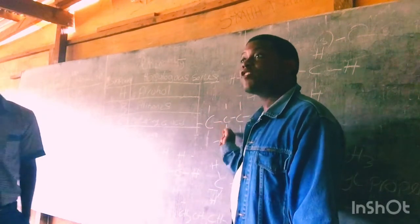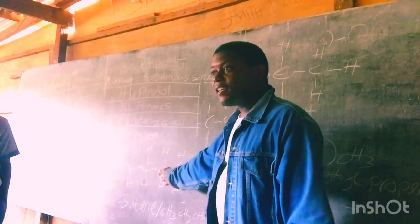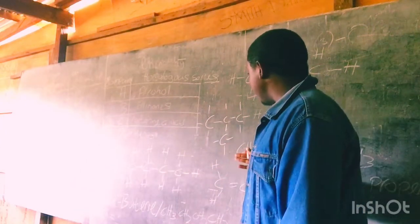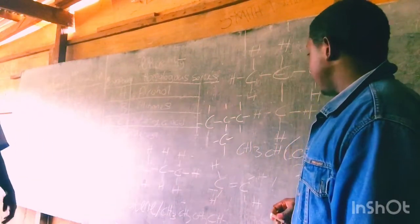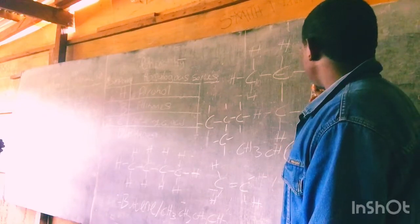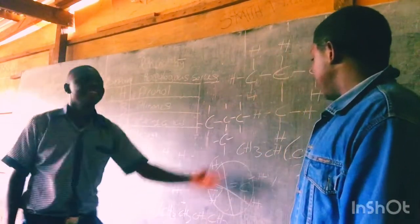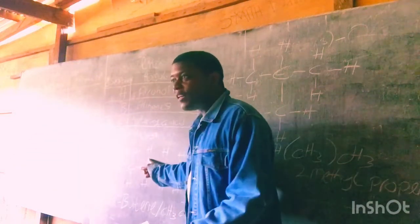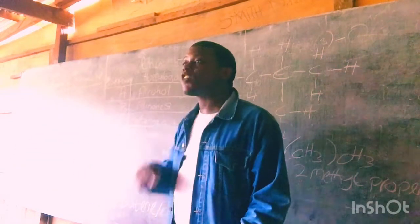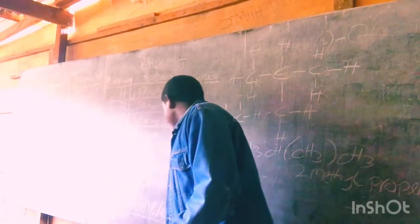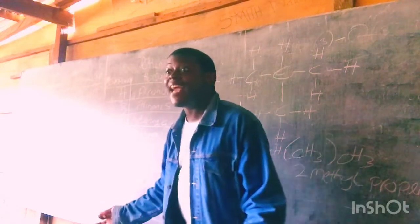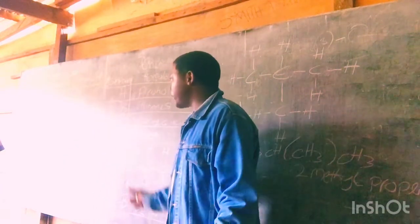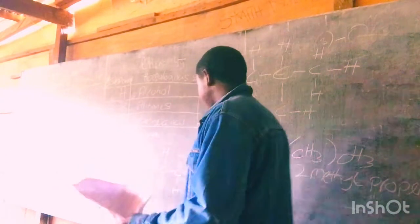That's how you draw isomers. One important thing: if you are writing an isomer of a particular compound and it is an alkane, make sure that the isomer is also an alkane. A student wrote butene here, which is wrong — butene belongs to a different homologous series, the alkene group. You should be very careful.